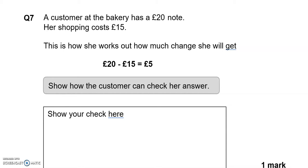A customer at the bakery has a £20 note. Her shopping costs £15. This is how she works out how much change she will get: £20 - £15 = £5. Show how the customer can check her answer. So £15 is the cost of the shopping, add the £5 she's getting in change, that equals £20, which is what she had to begin with.